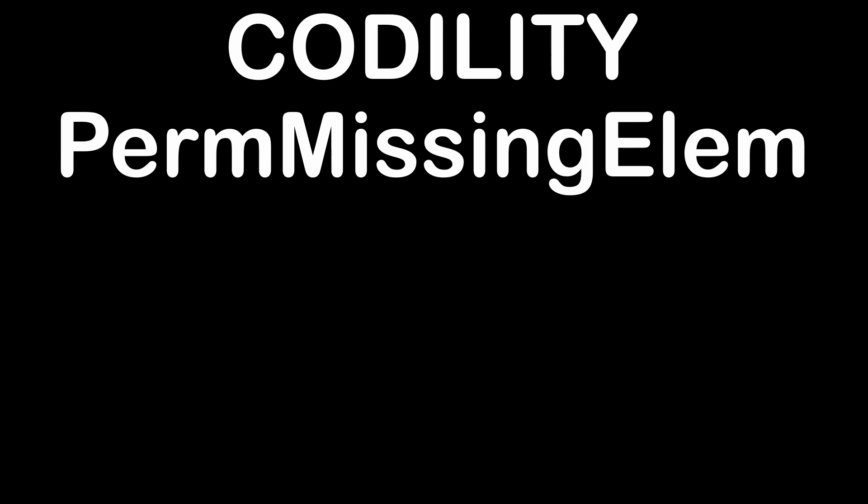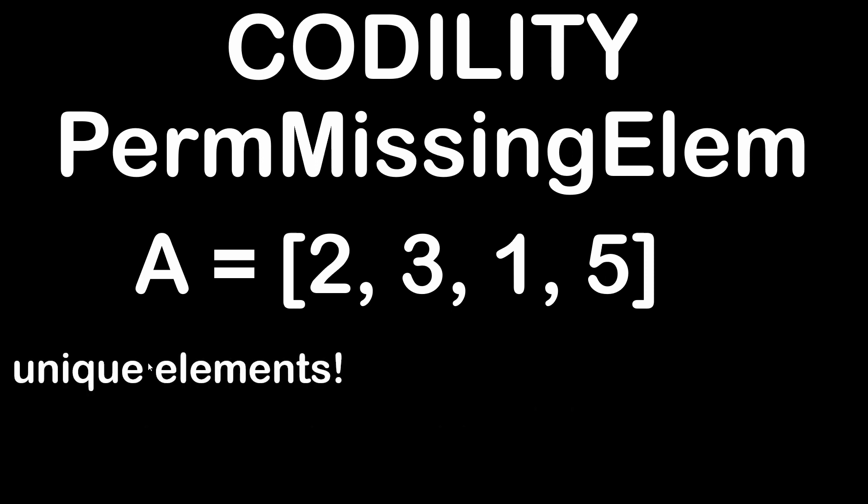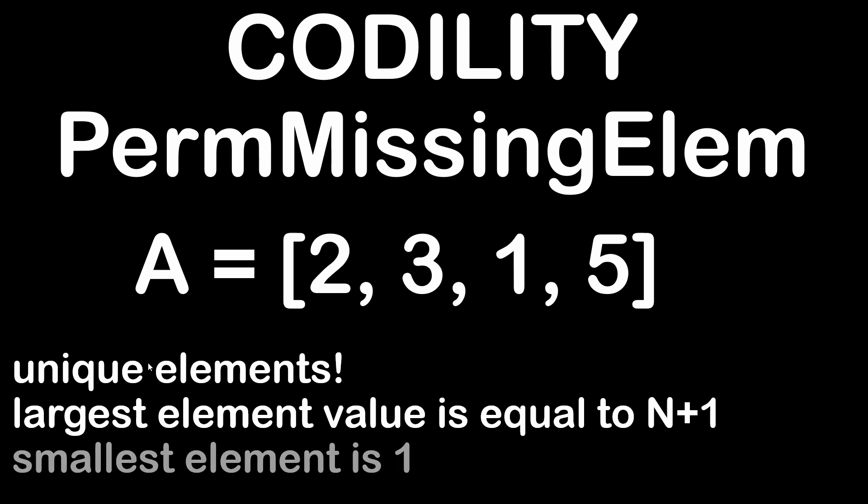We will see two different ways of solving the problem and we will write the most efficient solution in C++ and in Python. Basically we are given an array with size N containing unique elements. The largest element value is equal to N+1, that is the size of the array plus 1, and the smallest element has a value of 1.